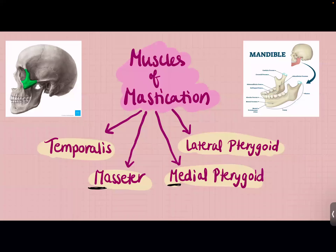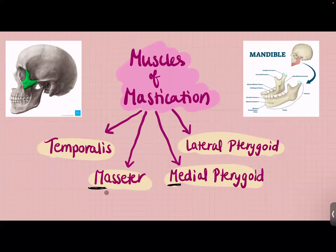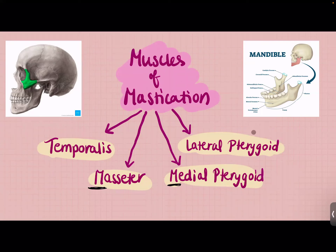Now let's talk about mastication — just a fancy word for chewing. We have four muscles of mastication, all attached to the mandible, which is the lower jawbone. The first muscle is the temporalis, around your temple area. The second is the masseter, attached to the zygomatic bone — your cheekbone. Then we have the medial pterygoid and lateral pterygoid. The primary job of all these muscles is to open and close our mouths and move it side to side so we can chew our food.